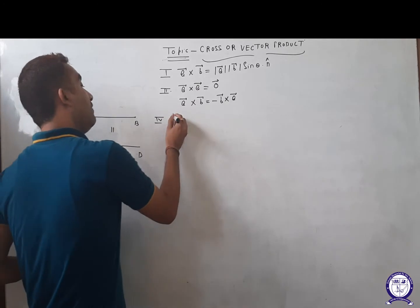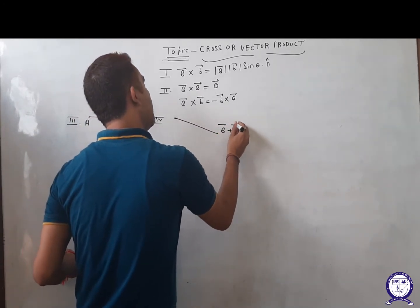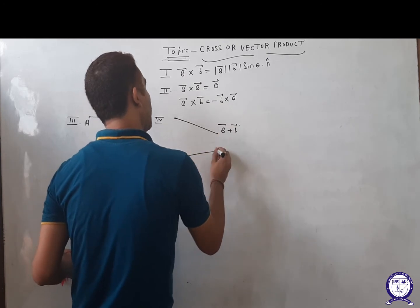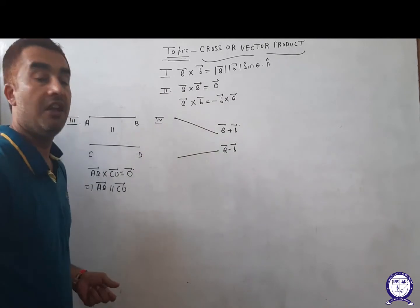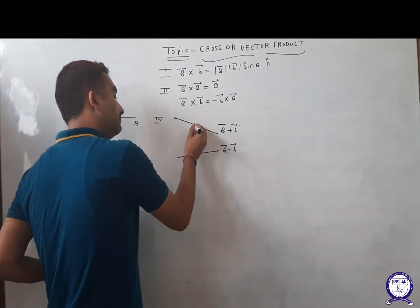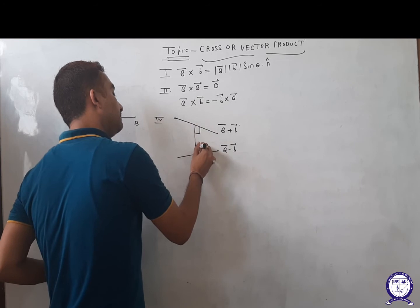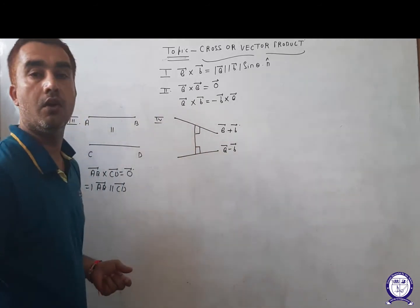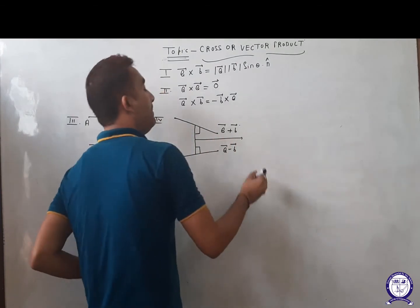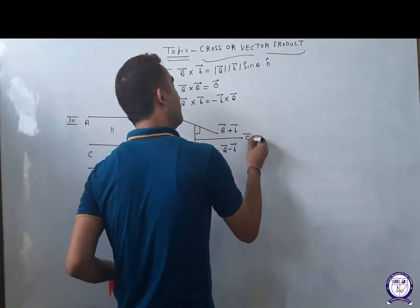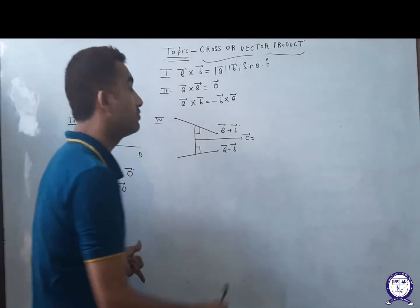If we have two vectors, suppose A vector plus B vector and A vector minus B vector, and we need a single vector which is perpendicular to both vectors, that single vector will be the CROSS of both. You can call it C vector — a single vector perpendicular to both vectors is the CROSS of both.